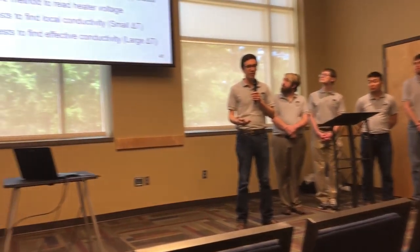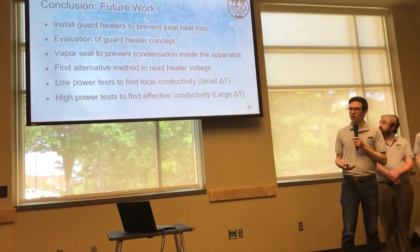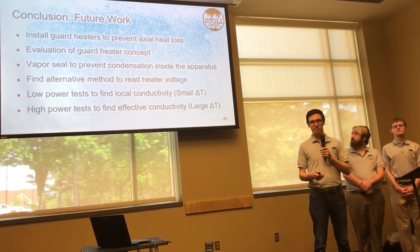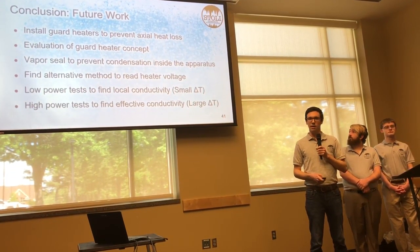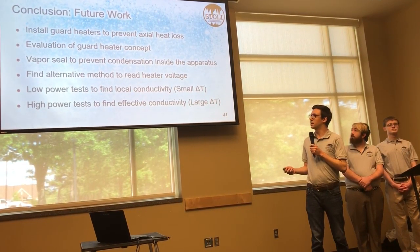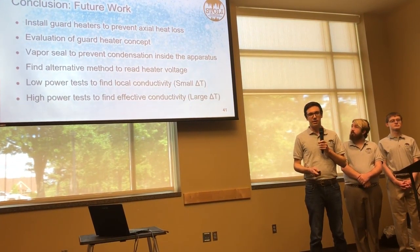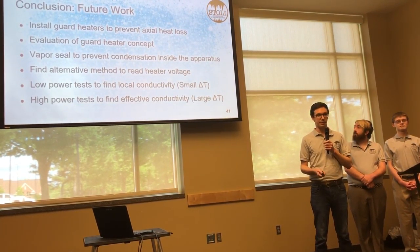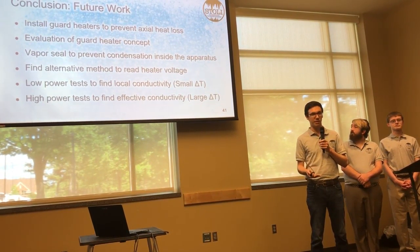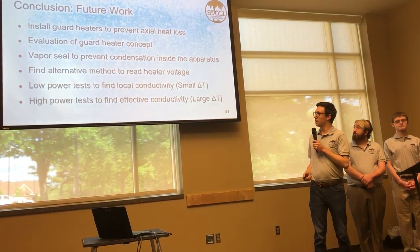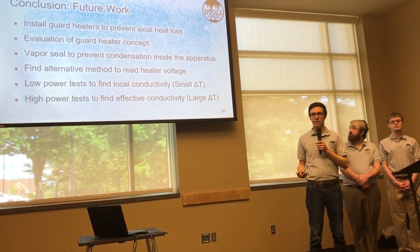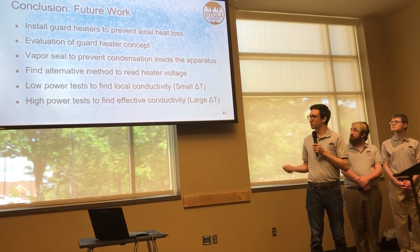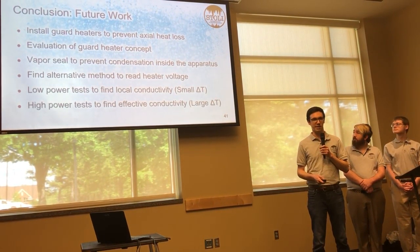Future work includes implementing guard heaters to eliminate the axial temperature gradient — these were too complex for this year. A vapor seal might prevent air condensation inside the pipe at cryogenic temperatures. An alternative method to read heater voltages would help for high-power testing, along with both low- and high-power test runs.